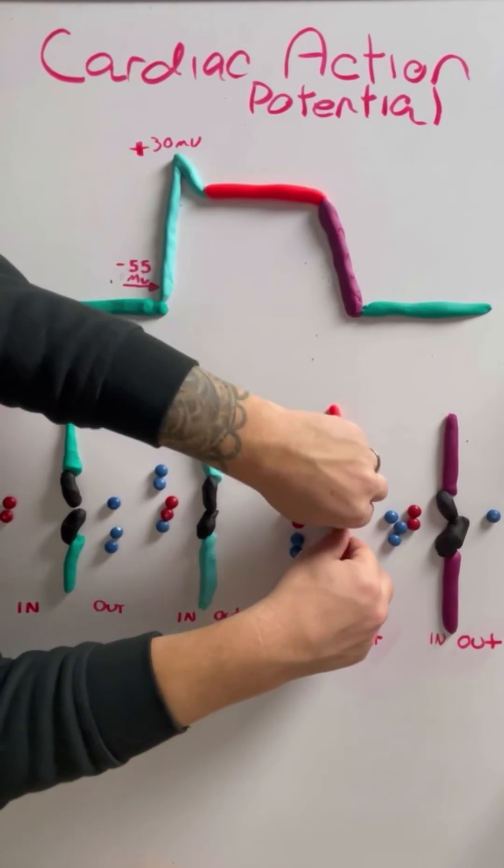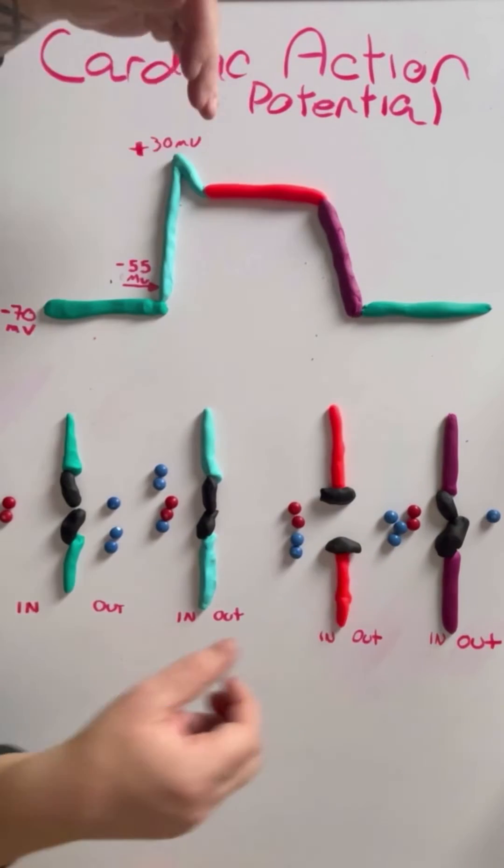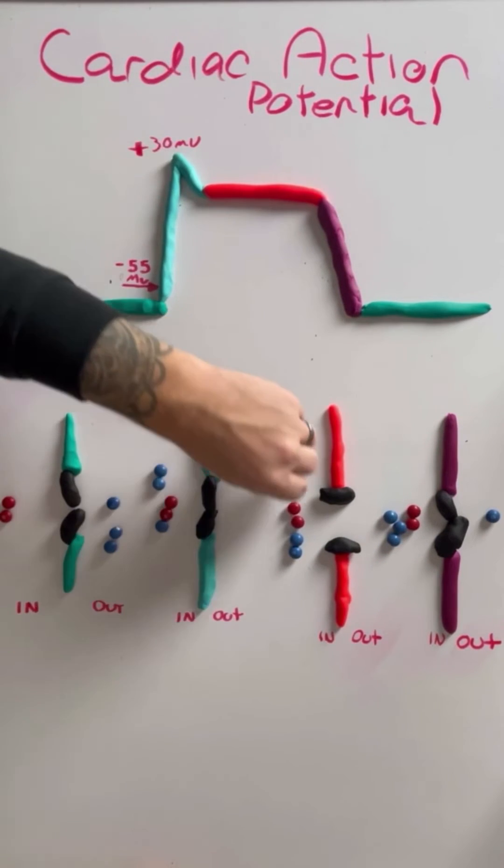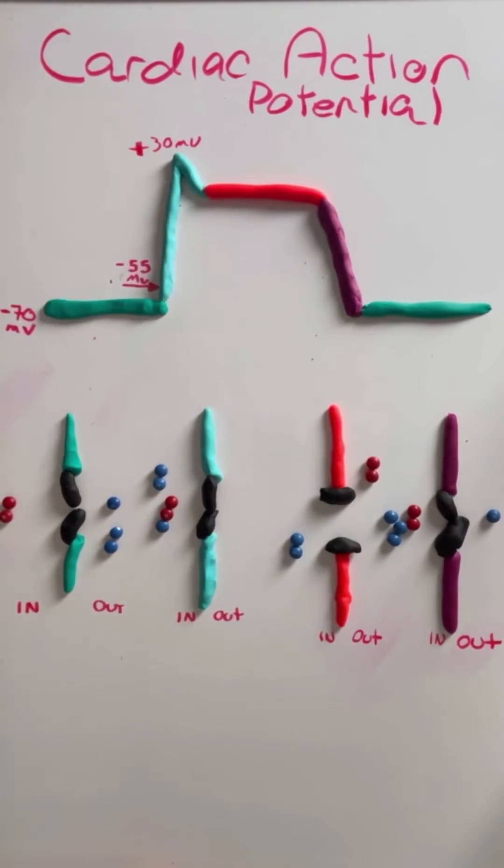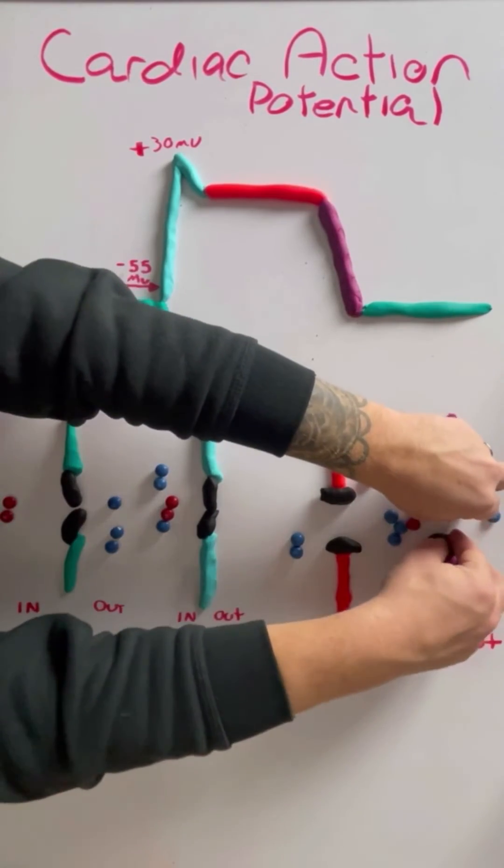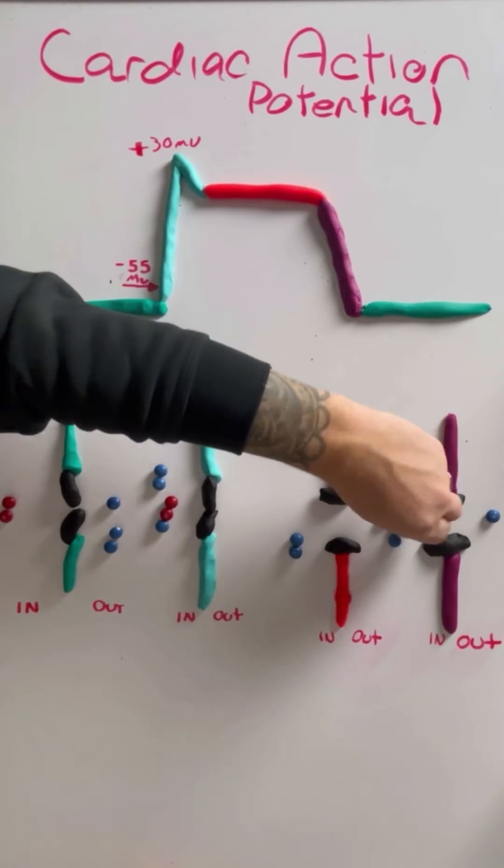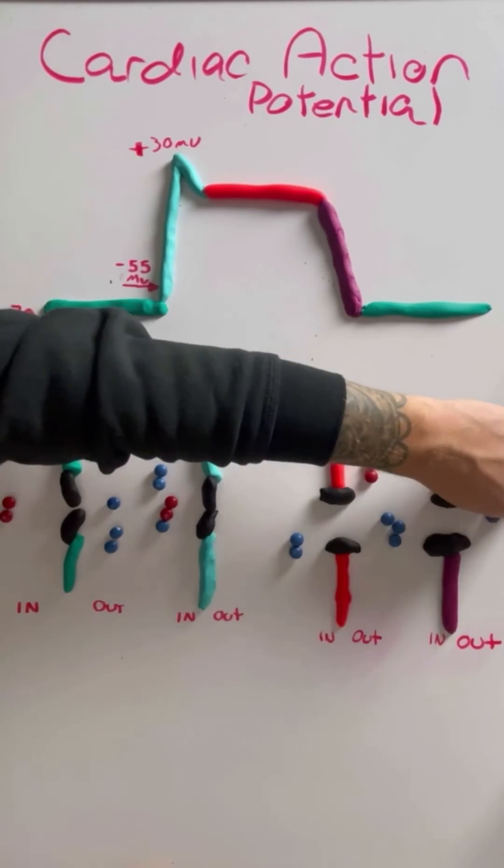...our potassium channels are going to open right about here. And when they open, it allows potassium to move from inside the cell to outside the cell. And they're going to continue to open, opening more channels, allowing for more potassium to move from inside the cell to outside the cell.